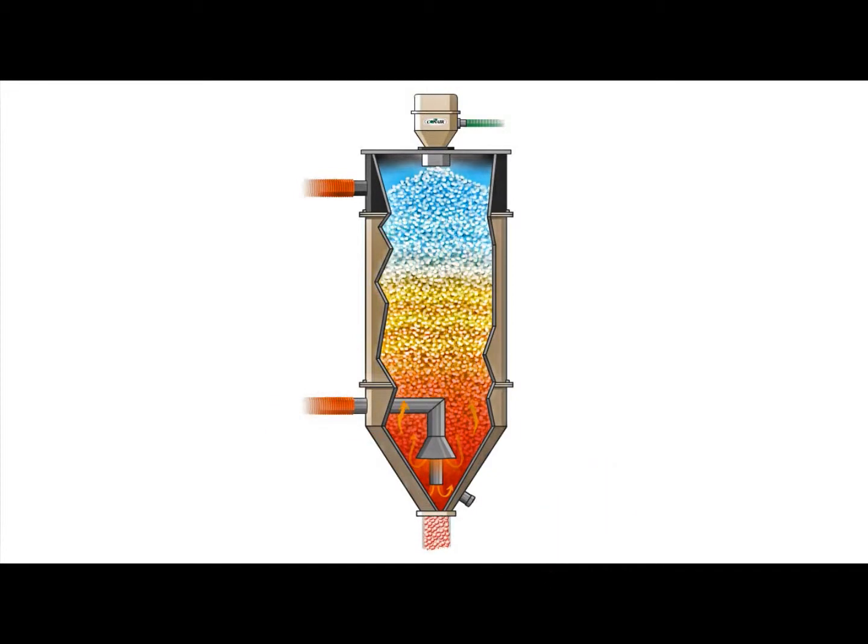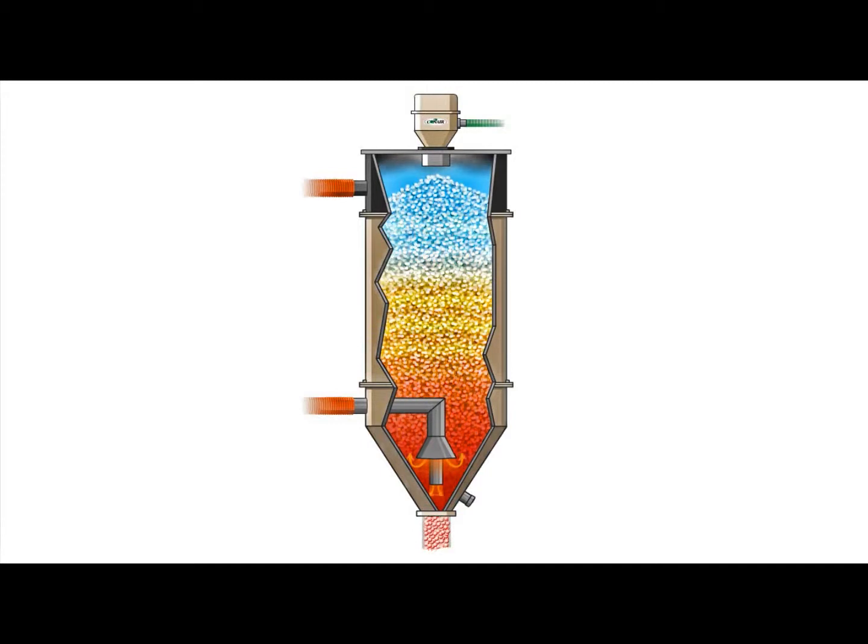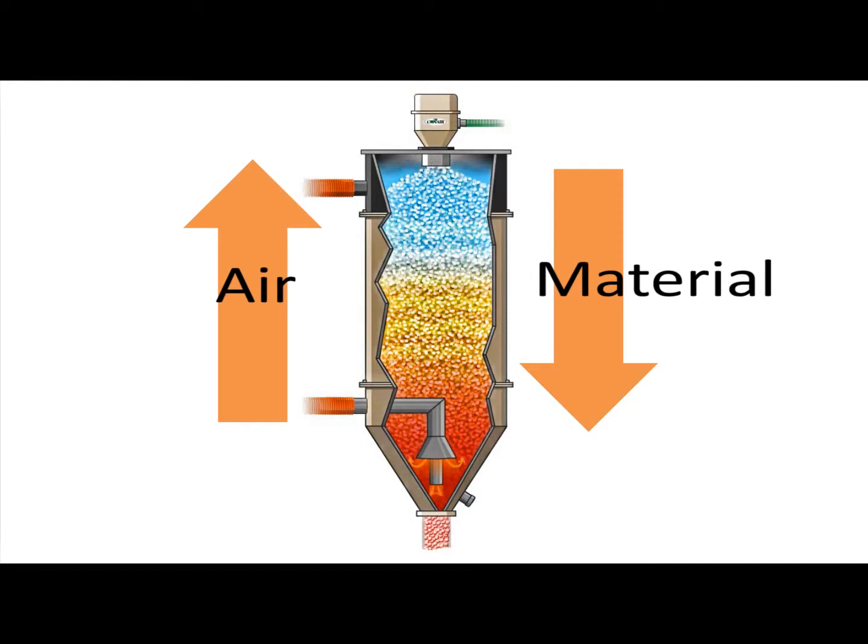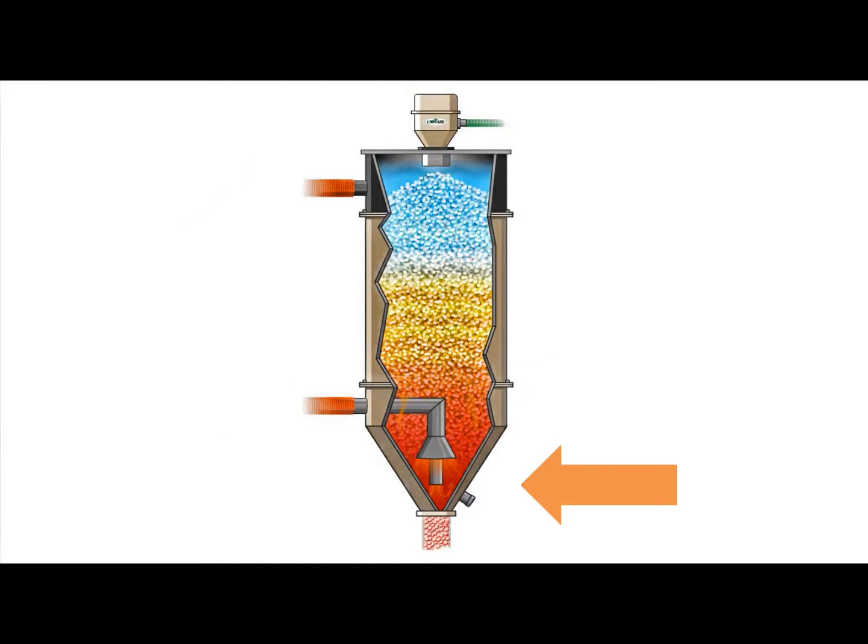When the equipment is sized properly, this dynamic process of material flowing down through the hopper while hot air flows up through the hopper creates a predictable temperature profile in the hopper.